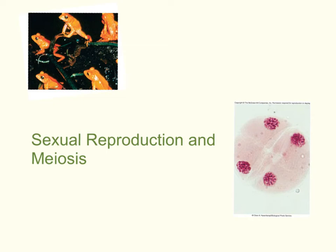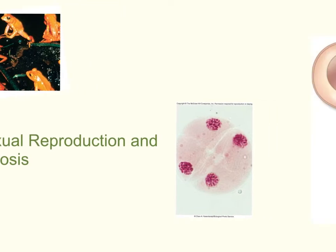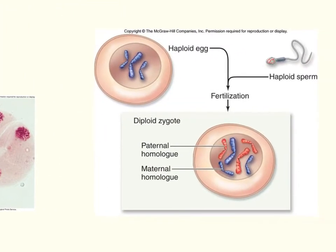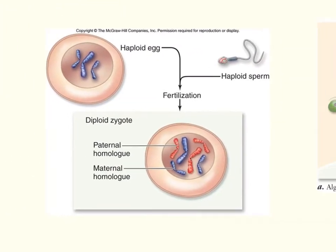Hello and welcome to the overview of Chapter 11, Sexual Reproduction and Meiosis. Sexual reproduction involves meiosis and fertilization.